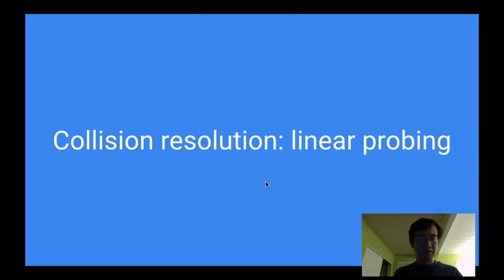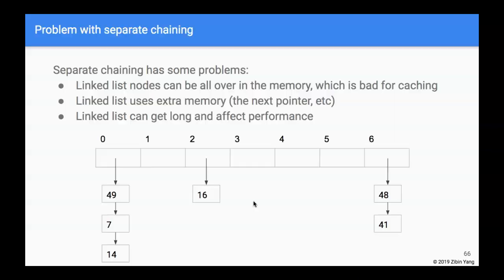In this video we're going to talk about a different collision resolution strategy called linear probing. We previously talked about separate chaining, but separate chaining has some problems. The most serious one, for those who understand computer architecture, is that linked list nodes are just pointers — every node points to the next node somewhere else in memory, so all these nodes can live all over the memory, which is very bad for caching.